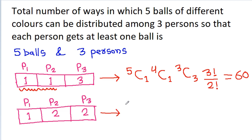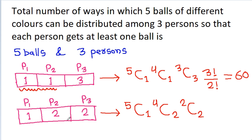In Case 2, we have 5 balls and choose 1 ball to give to person 1. Then we have 4 balls left and choose 2 to give to person 2, giving C(4,2) = 6. These 3 persons can be arranged in 3! ways, and since 2 persons are getting the same number of balls, we divide by 2!. So it is 5 × 6 × 1 × 3 = 90.